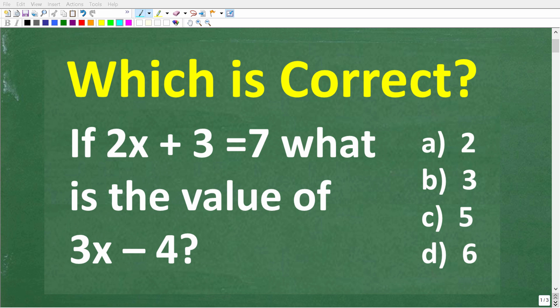Many people are going to tend to overthink this math problem, but let's see if you can figure this out. So the question is, if 2x plus 3 is equal to 7, what is the value of 3x minus 4?